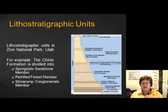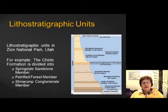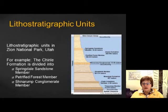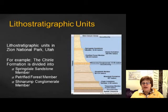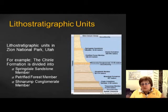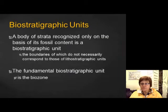Hello everyone, this is the last segment of Chapter 2 in Historical Geology: Rocks, Fossils, and Time. This is Dr. Anna. In the last slideshow I finished with the lithostratigraphic unit, and this slide shows an example of it — Zion National Park, Utah. You can see the formation names, and the Chinle Formation is divided into some members, because sometimes formations are divided into members and beds.